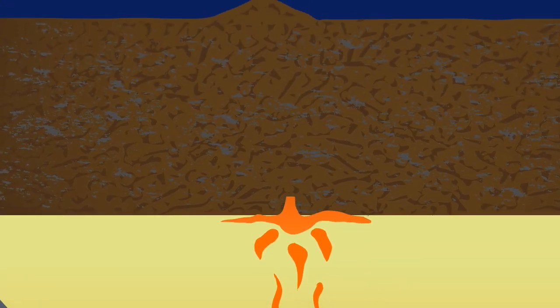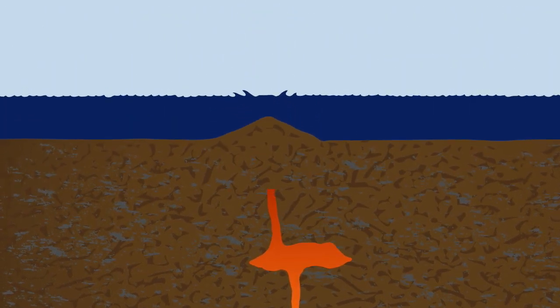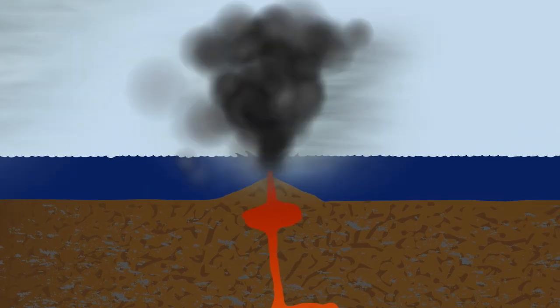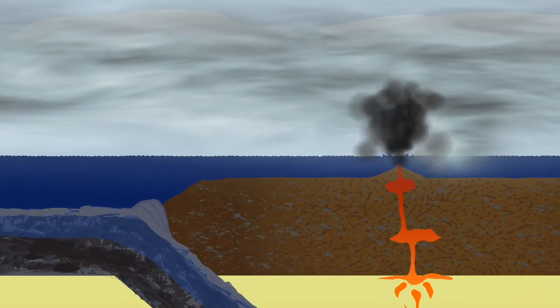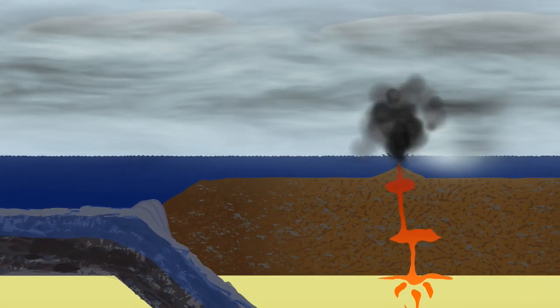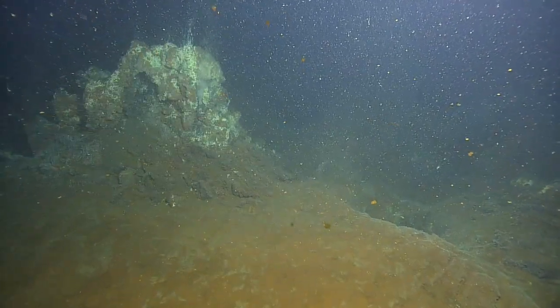This magma continues to move through different layers of crust, changing composition as it goes, and when it finally reaches the surface, it creates a powerful volcanic eruption. This Nautilus expedition season, we will be exploring underwater volcanoes,